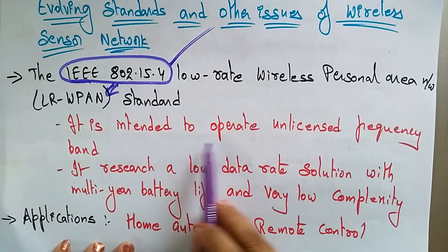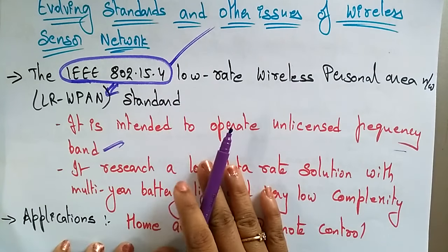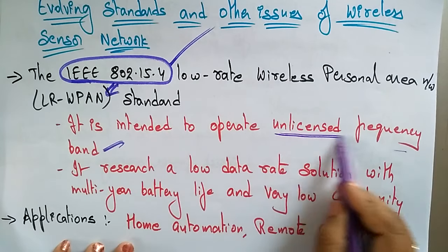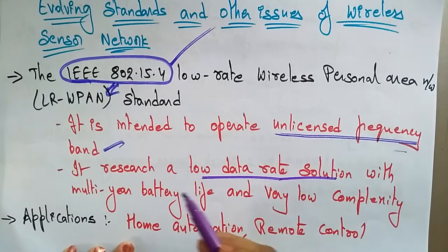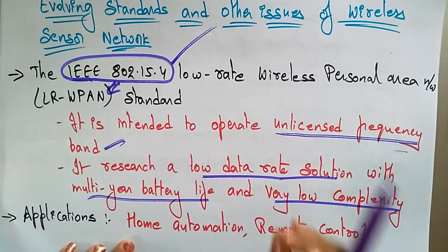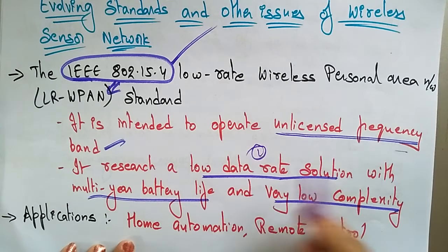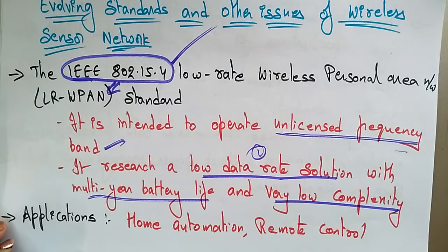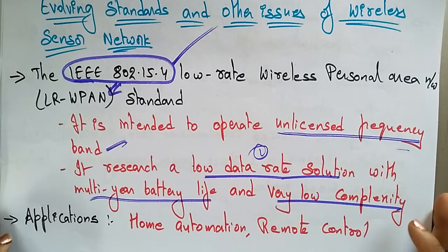This standard is intended to operate on unlicensed frequency bands. The IEEE 802.15.4 LR-WPAN standard is designed to research low data rate solutions with multi-year battery life and very low complexity.